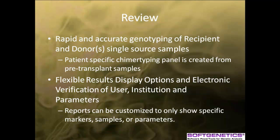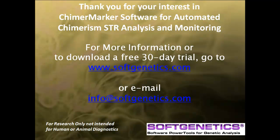In today's webinar, we went over the rapid and accurate allele and size calling for post bone marrow transplant double donor chimerism analysis. The pre-transplant samples were used to automatically create a chimer typing panel and used for peak identification and quantification. Finally, we talked about the flexible capabilities of ChimerMarker to include or exclude certain parameters, print reports, and save the reports with relative information from user management. Thank you for your interest in ChimerMarker software for automated chimerism SCR analysis and monitoring. For more information or to download a free 30-day trial, go to www.SoftGenetics.com or send us an email at info@SoftGenetics.com. See you next time.